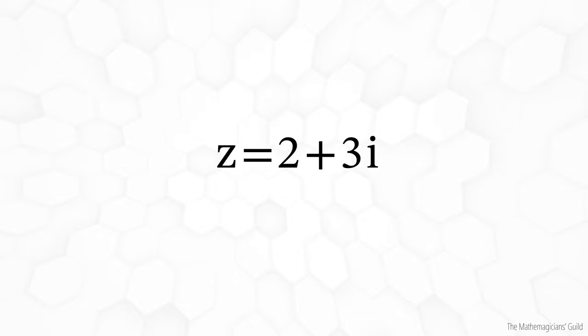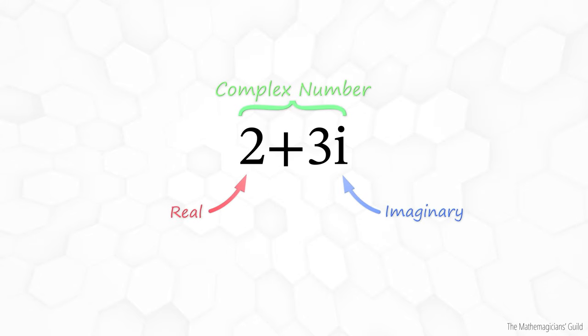2 plus 3i could easily be the solution to a simple equation. The real component 2 is just an ordinary number. If the imaginary part was 0i then the value would simply be 2, a real number. The real numbers are just a small subset of the complex numbers.